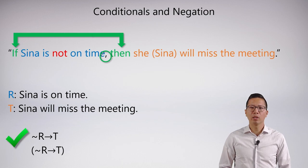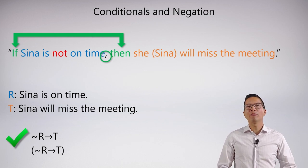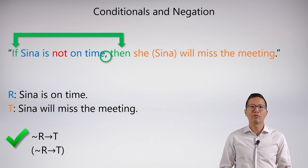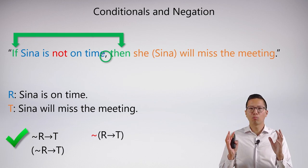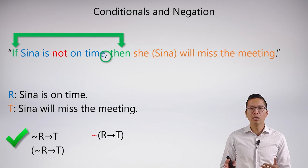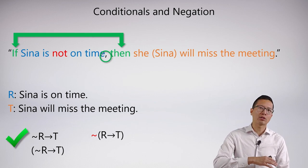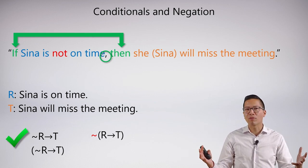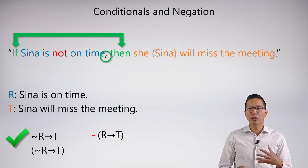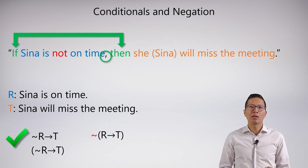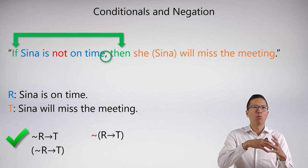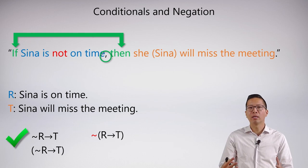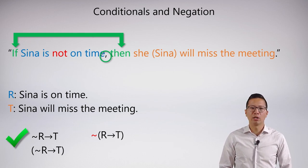Now you can see what would happen if you made a mistake with identifying the main connective. You might get something like ¬(R → T), because you might think that the not is actually modifying the entire if-then sentence. This is where punctuation really matters, and being able to identify the scope — what the connectives are modifying — is critically important in symbolization. So that is not a good solution.